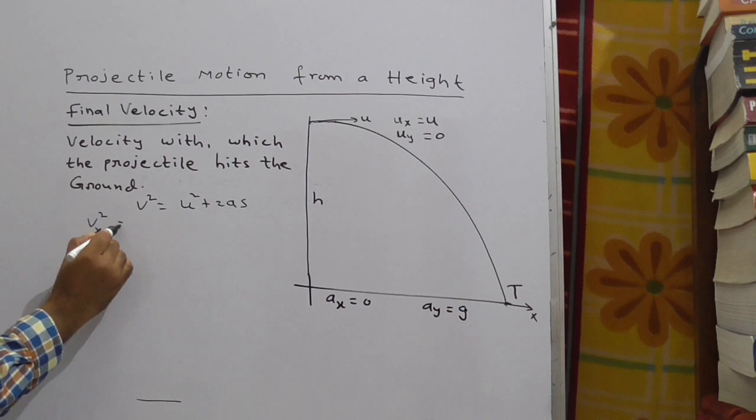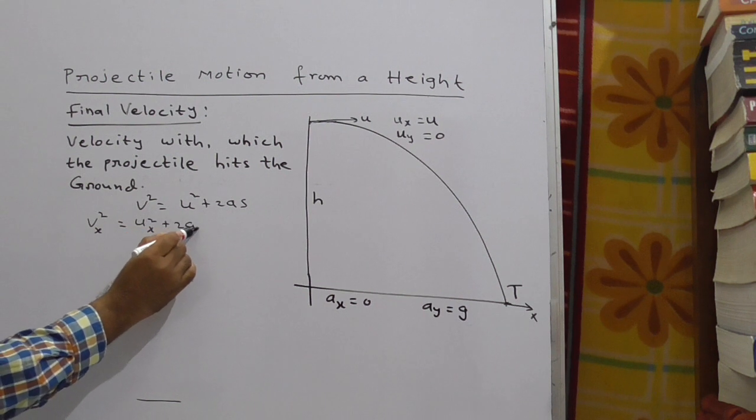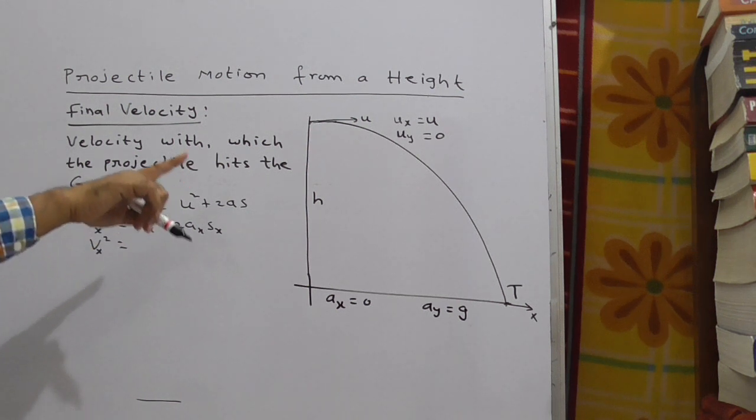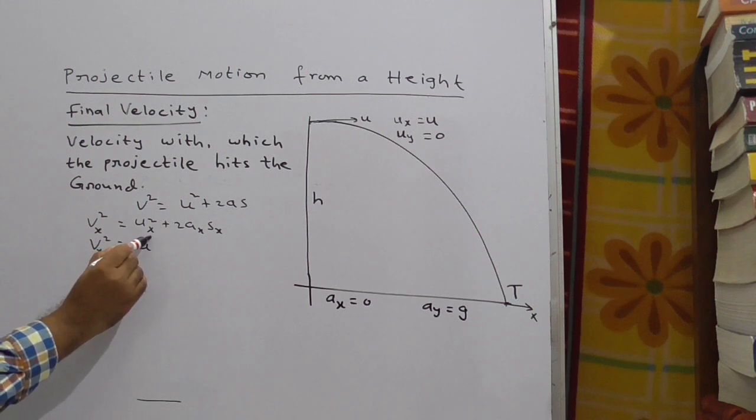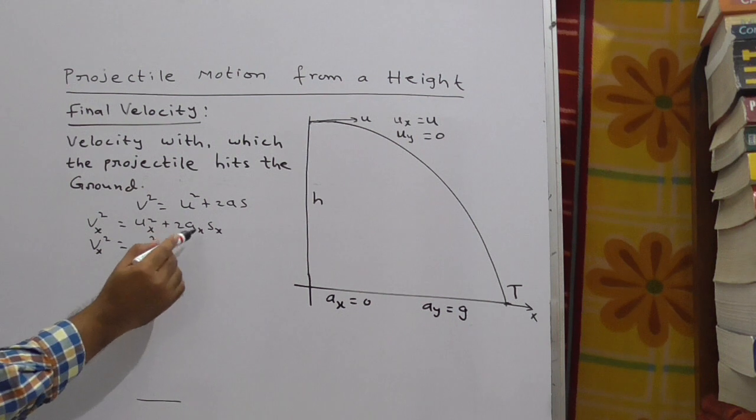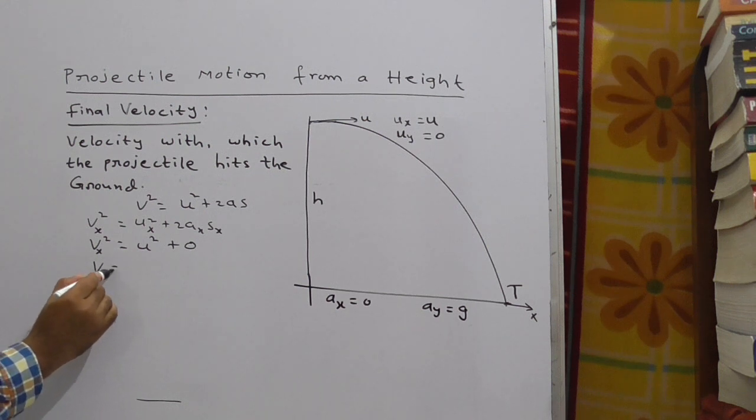With respect to x, this is v_x² = u_x² + 2a_x·s_x. Now v_x² equals u_x is nothing but u² plus a_x is zero here. Therefore this quantity is zero. Now v_x² = u², therefore v_x = u.